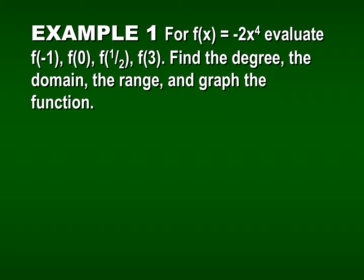Let's look at an example. We have f of x equals negative 2 times x to the fourth power. We want to evaluate it for f of negative 1, f of 0, f of one-half, and f of 3. We also want to look at the degree, the domain, the range, and the graph of this function. To evaluate, remember that f of negative 1 means let x equal negative 1 and find what f of x is.